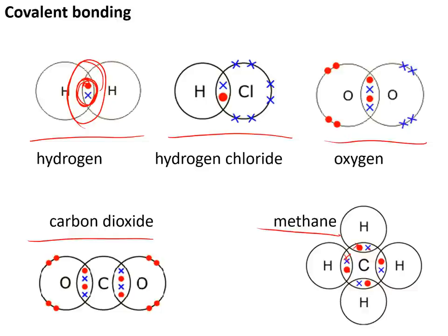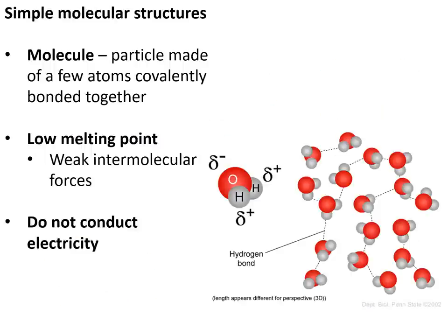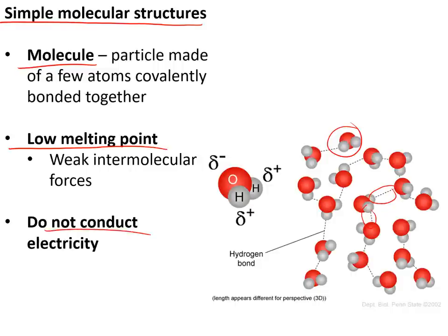Some covalent compounds form simple molecular structures made of molecules — a molecule is a particle made of a few atoms bonded covalently together, such as a water molecule made of three atoms. They have low melting points because the neighbouring molecules are held together by weak intermolecular forces that don't take much energy to break. They do not conduct electricity because they have no electrons that are free to move.